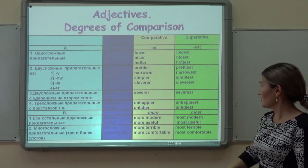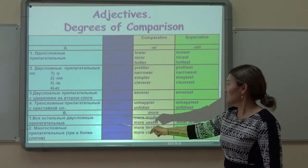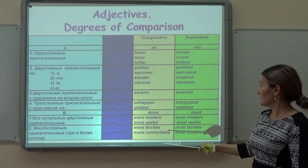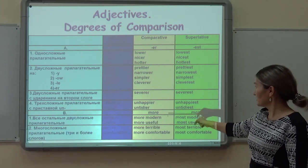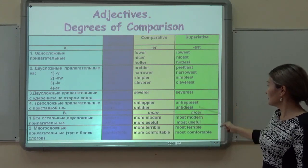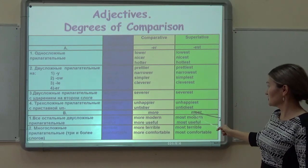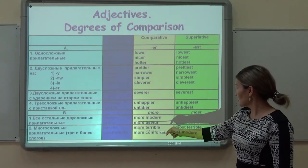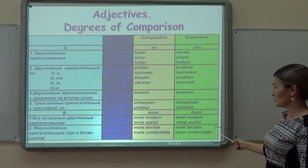What concerns complex adjectives with three syllables — we should add the word 'more' in the comparative degree and the word 'most' in the superlative. For example: modern, more modern, the most modern.